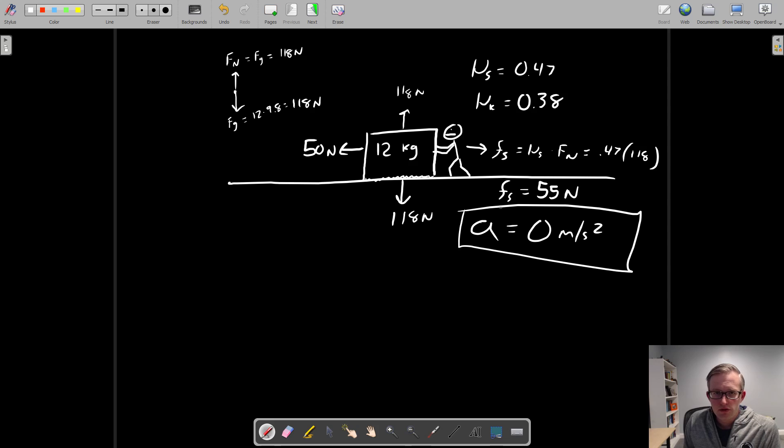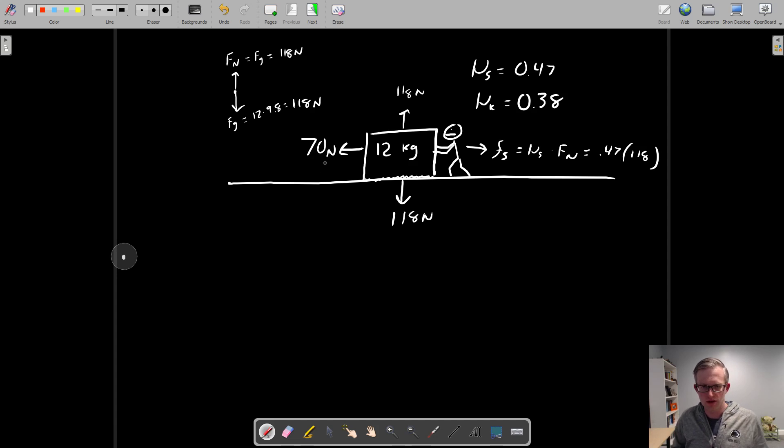Let's think instead maybe we didn't have a static friction that was so high. Or maybe you were pushing with 50 newtons and that just wasn't enough. So now instead, you've decided you're going to push with 70 newtons. You kind of limber up a little and you push more, and now you're pushing with 70 newtons of force.